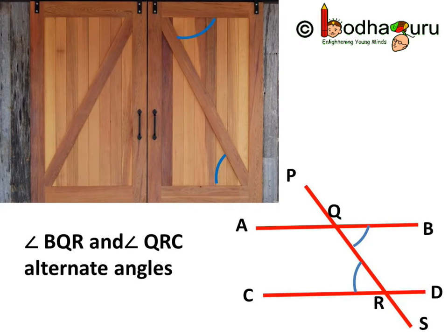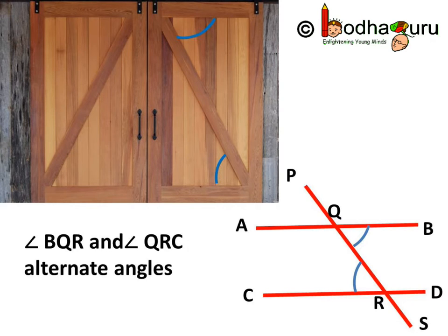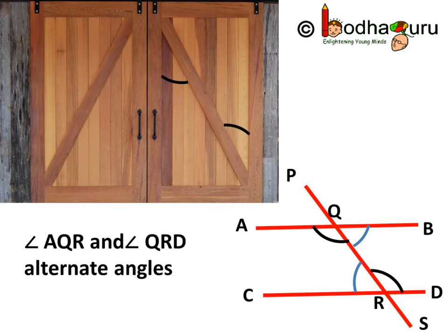Why? Because, first, they are interior angles. Second, they lie on the opposite sides of the transversal PS — one on the right side and the other on the left side of the transversal.